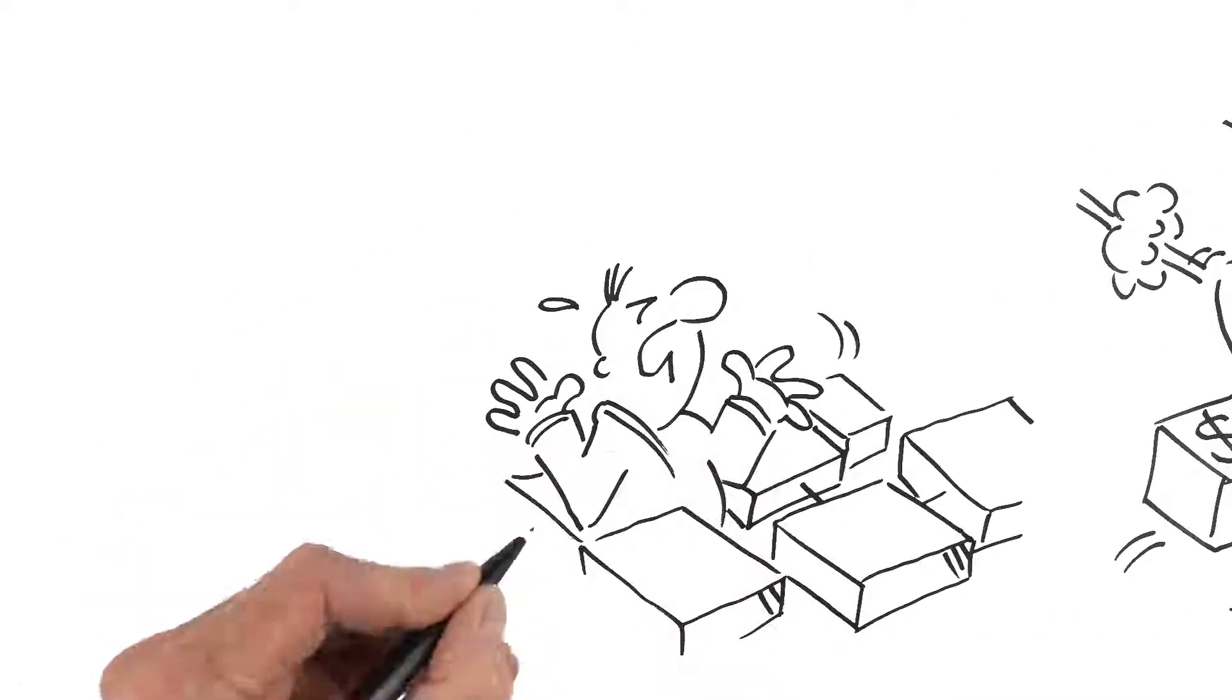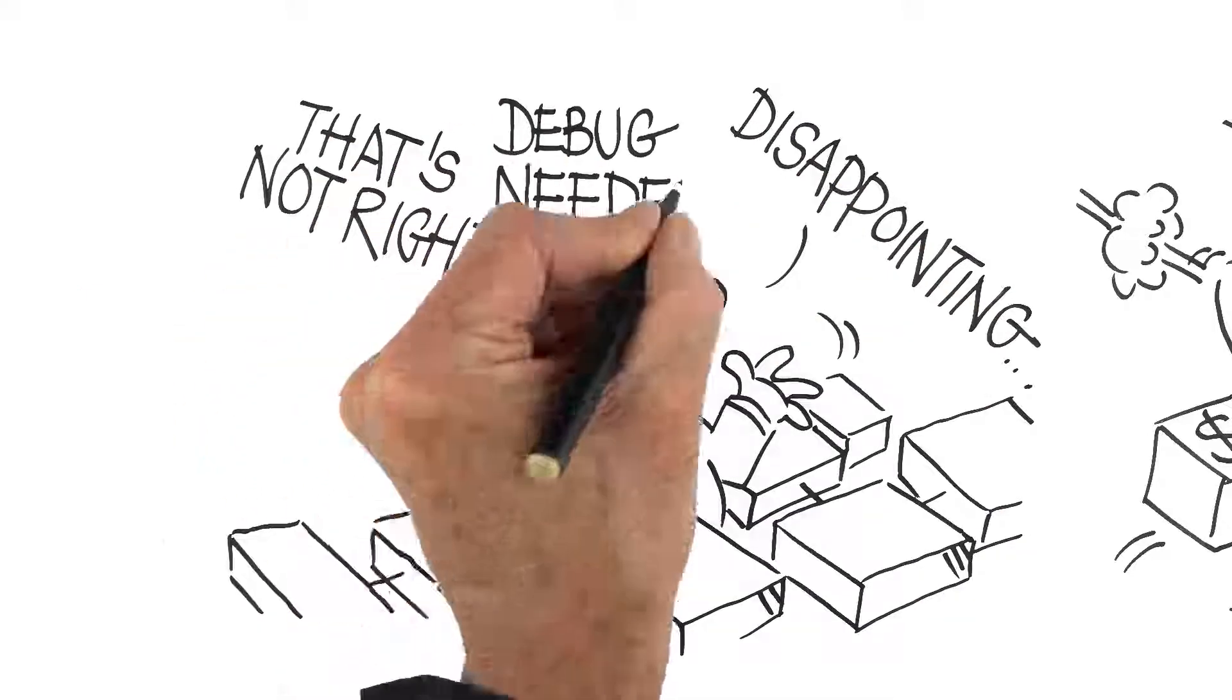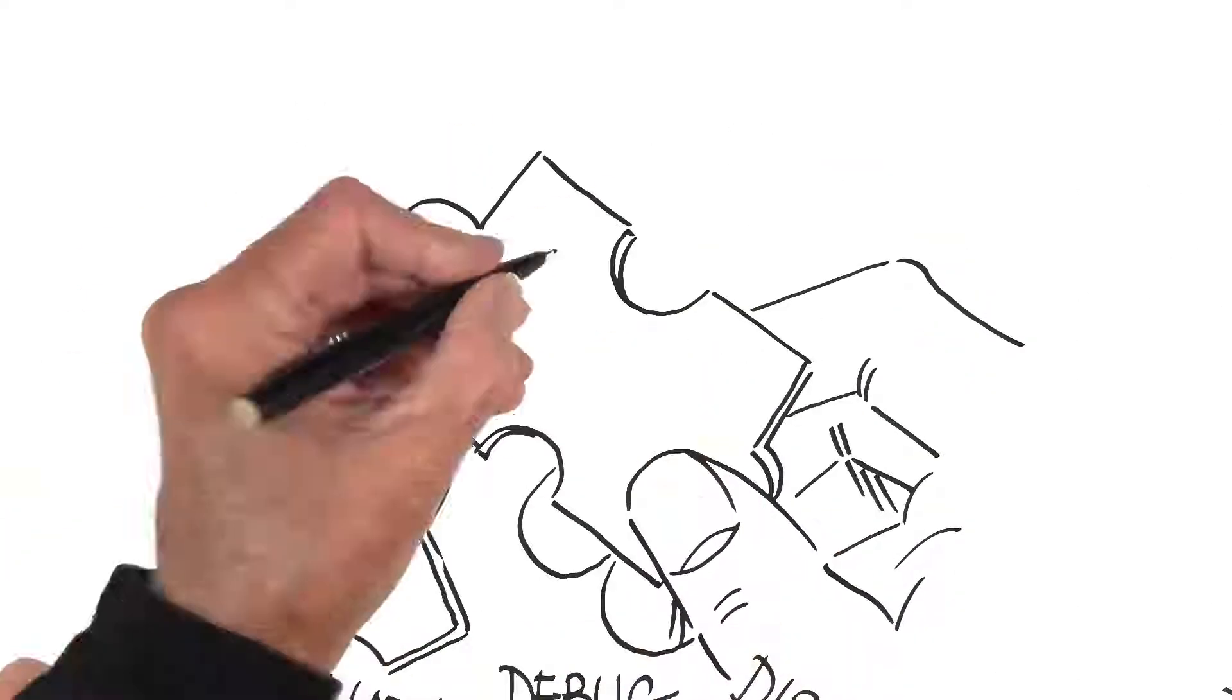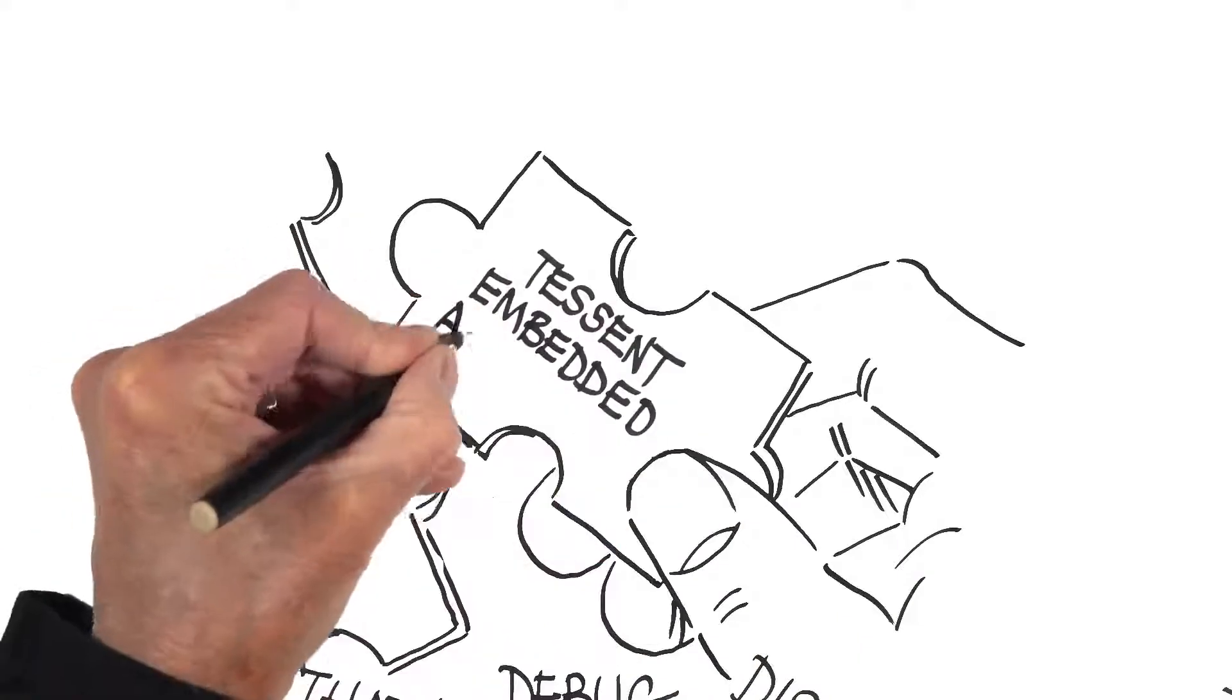But what if you'd built in something to say, that's not right, there's a problem here. Say you built in Tessent Embedded Analytics by Siemens.